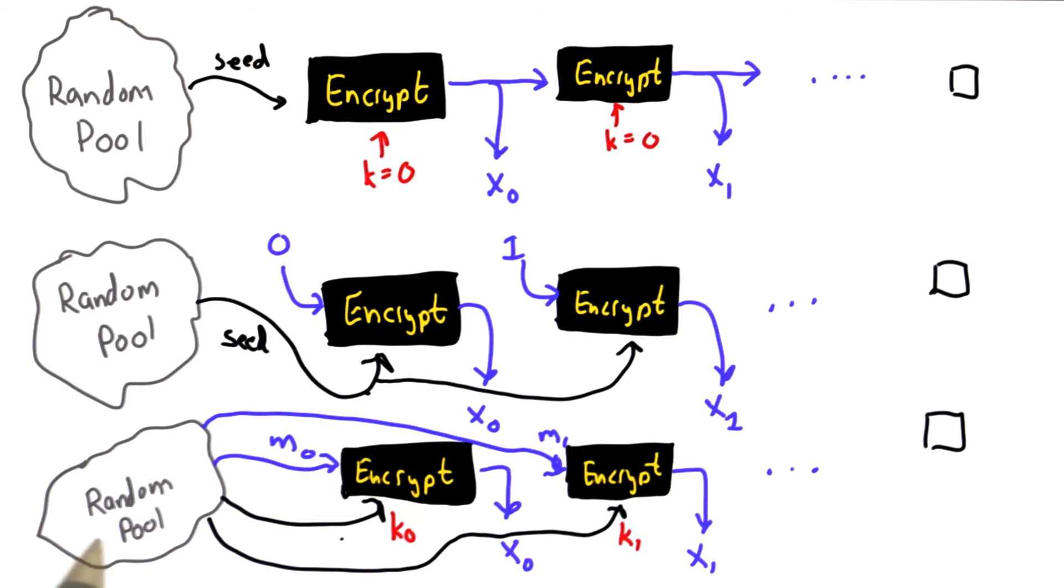For our third option, we'll extract new values from the random pool each time. We'll encrypt a message selected from the random pool with a key selected from the random pool to get x0. To get the next random number, we'll extract a new message from the random pool and a new key, and do that encryption.